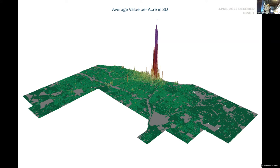We took this average value per acre map and turned it into a 3D model to better articulate the peaks of high value areas. The biggest observation regarding Chicago's transit line is actually what you don't see here. Like other maps, you see a purple spike downtown, but what you should ideally see is trails of yellow spikes indicating higher value of transit-oriented development around the transit stops.